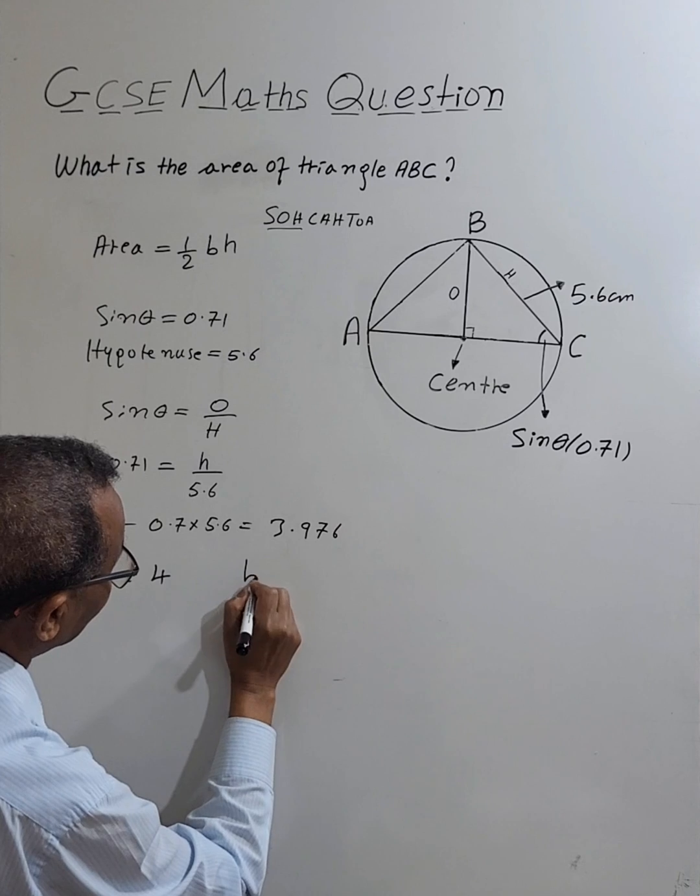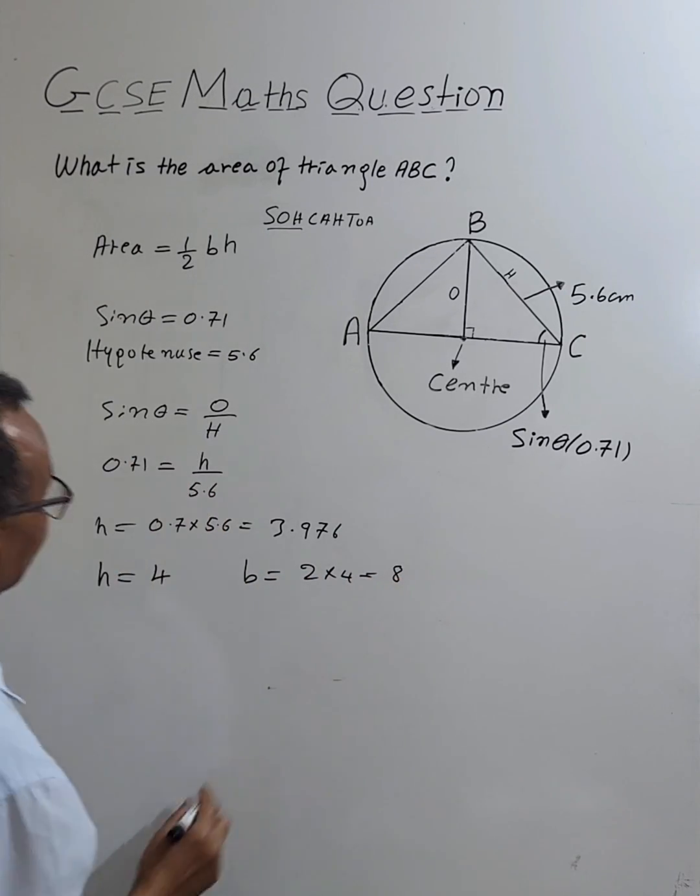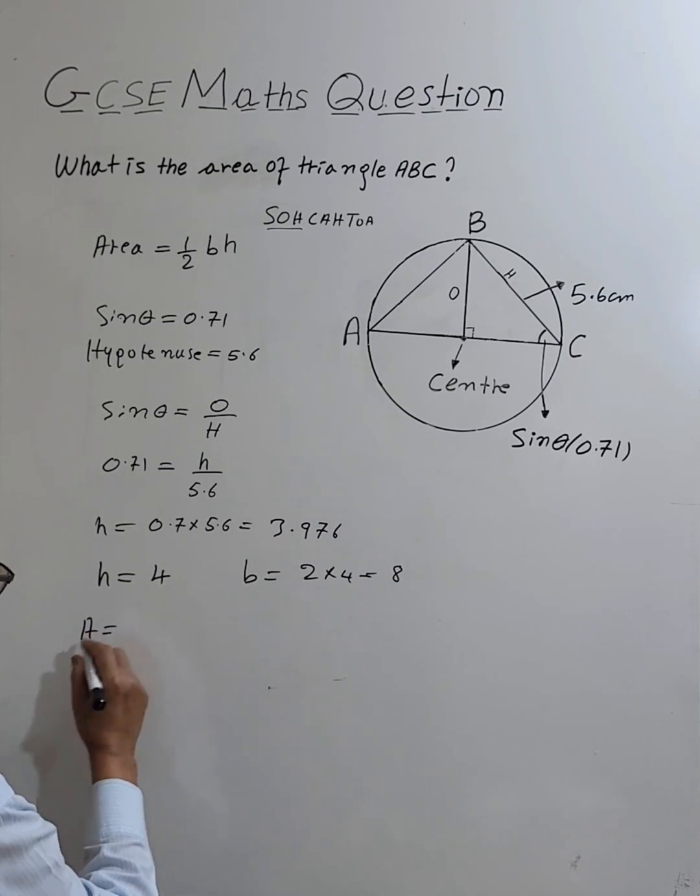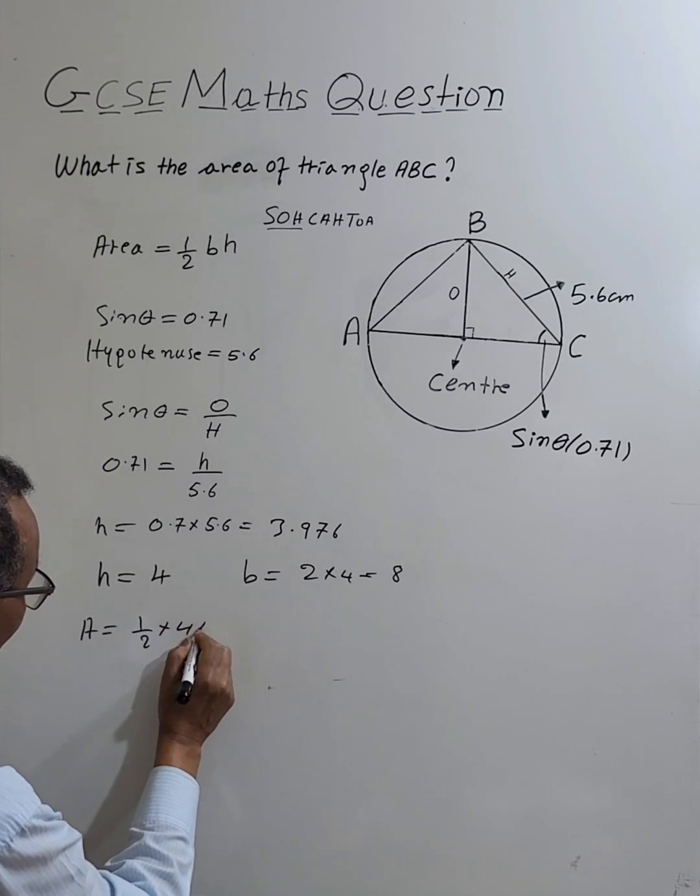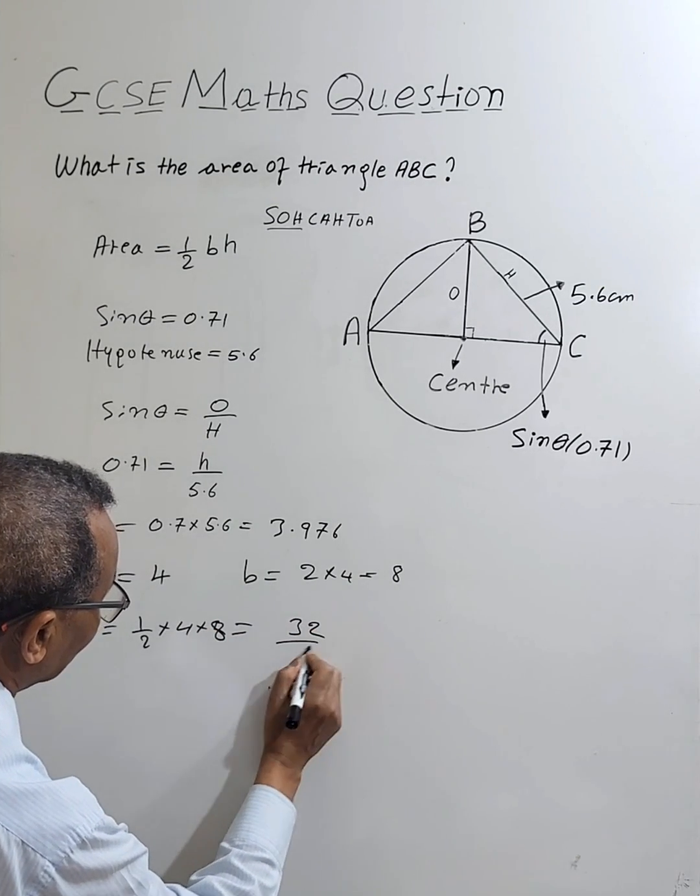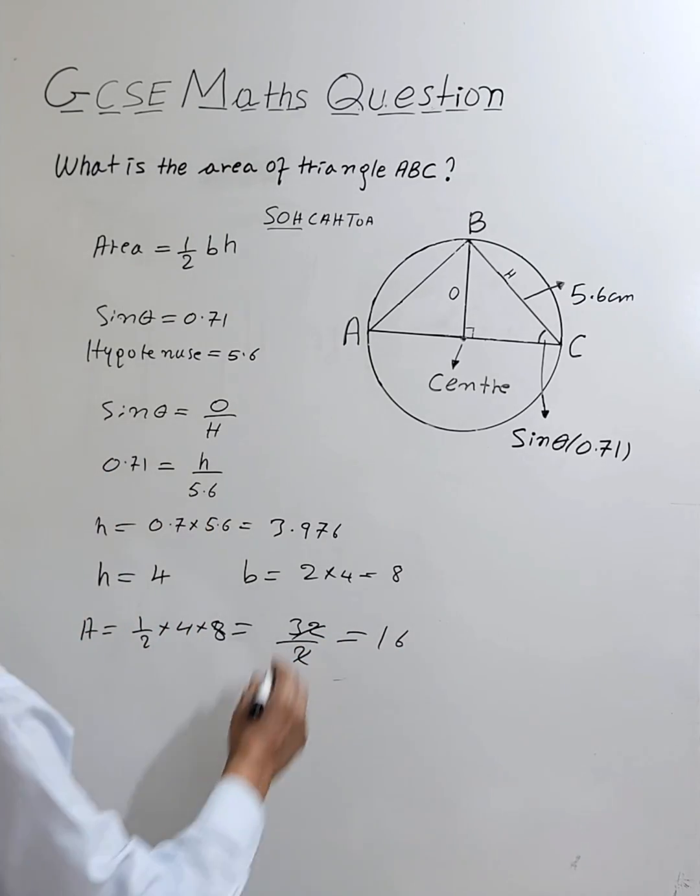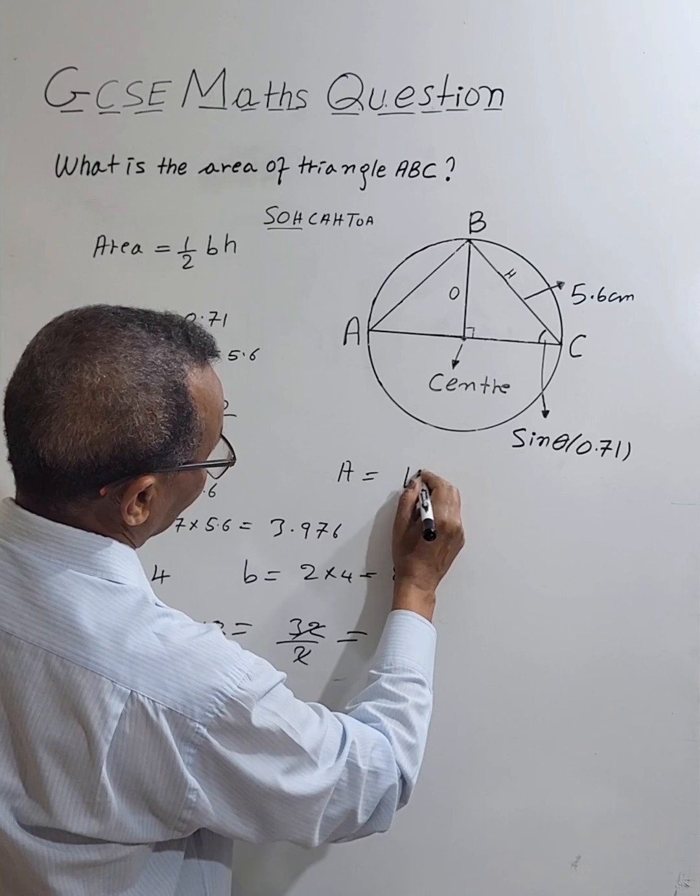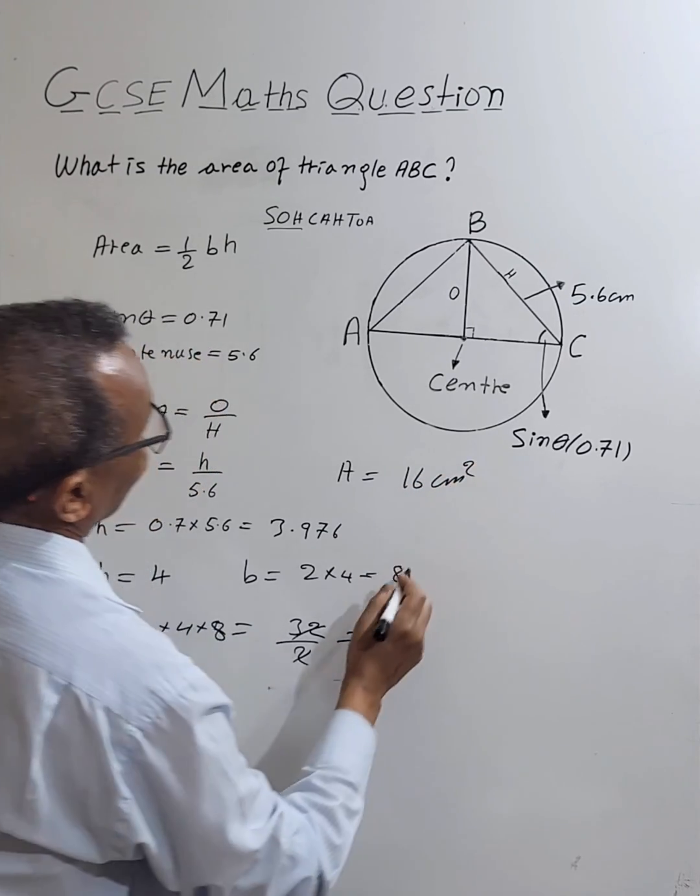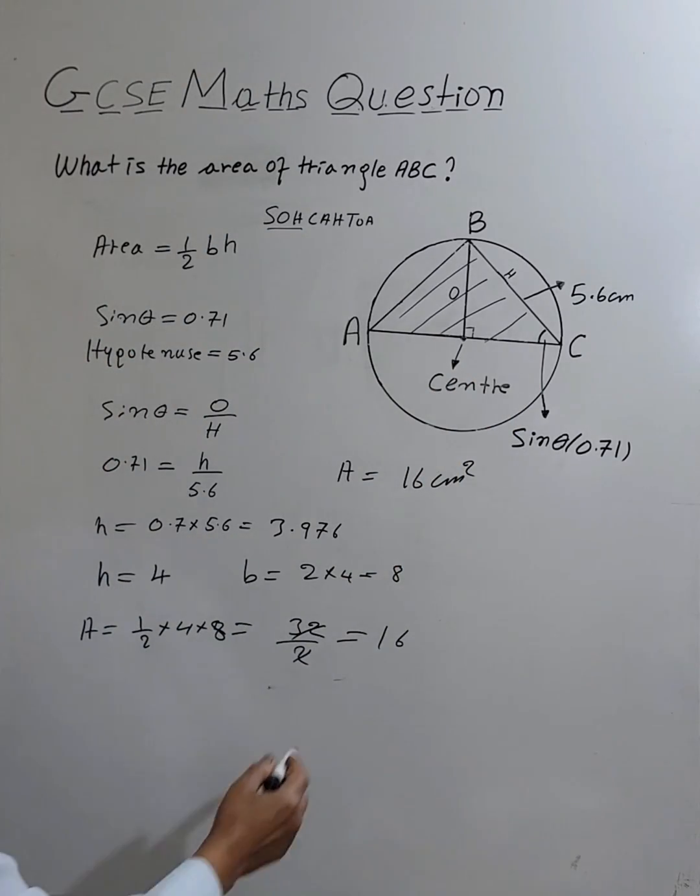So area of the triangle is half times 4 times 8 equals 32 over 2, which is 16. So area equals 16 centimeter square. Thank you very much.